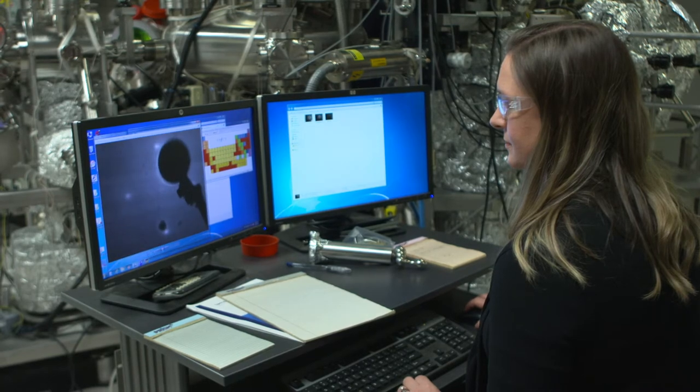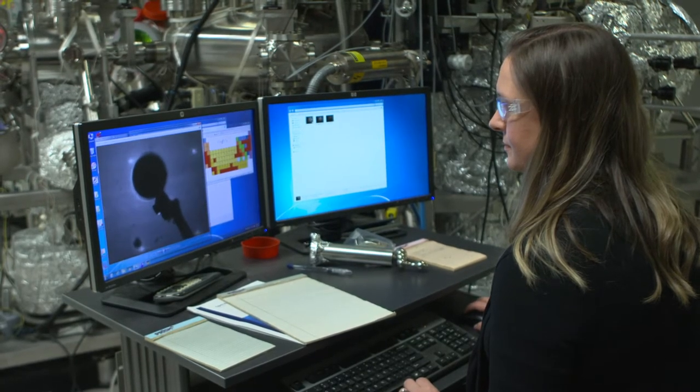I'm working on scanning probe microscopy to look at functional material parameters. We have a very sharp probe which goes in contact with the sample. This tip in reality is only 30 nanometer wide, so you get very small, high resolution, functional information about the material.